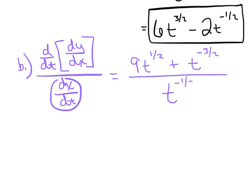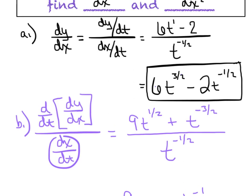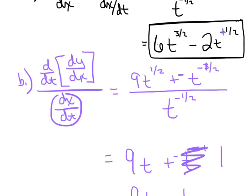Dividing through: the second derivative simplifies to 9t - 1. There was a small error earlier where an exponent sign was wrong — the correction traces through cleanly. The second derivative of this parametric is 9t minus 1, which measures the concavity of the parametric curve.